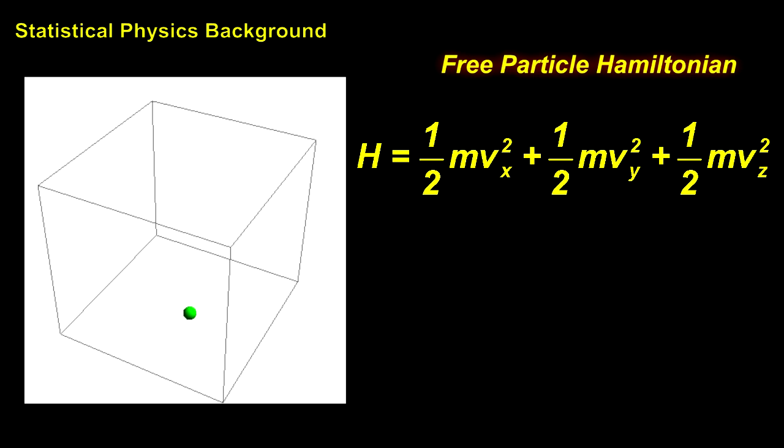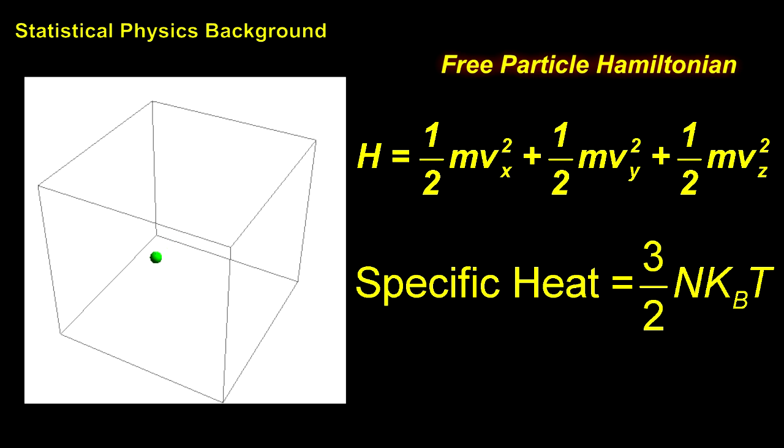Where m is the mass of the atom and v stands for velocity. The Equipartition Theorem says that the specific heat of a system composed of n such atoms will be three-halves nkt, where k is Boltzmann's constant and t is the temperature.